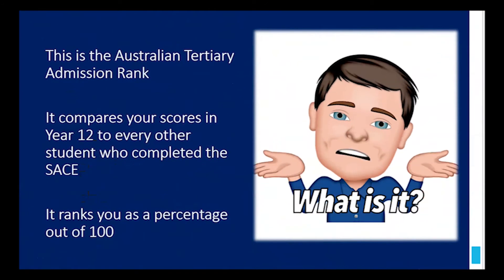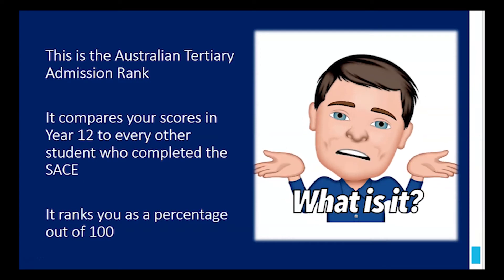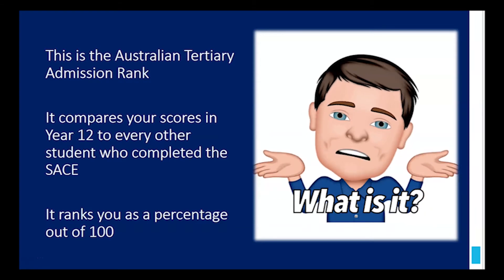The ATAR is the Australian Tertiary Admission Rank. It compares your scores in year 12 to every other student who has completed the SACE. It ranks you as a percentage out of 100. That's why it's called a ranking, and it's used for tertiary admission. That means anything beyond school. So you're in secondary school at the moment, you're going to go to tertiary education - universities.